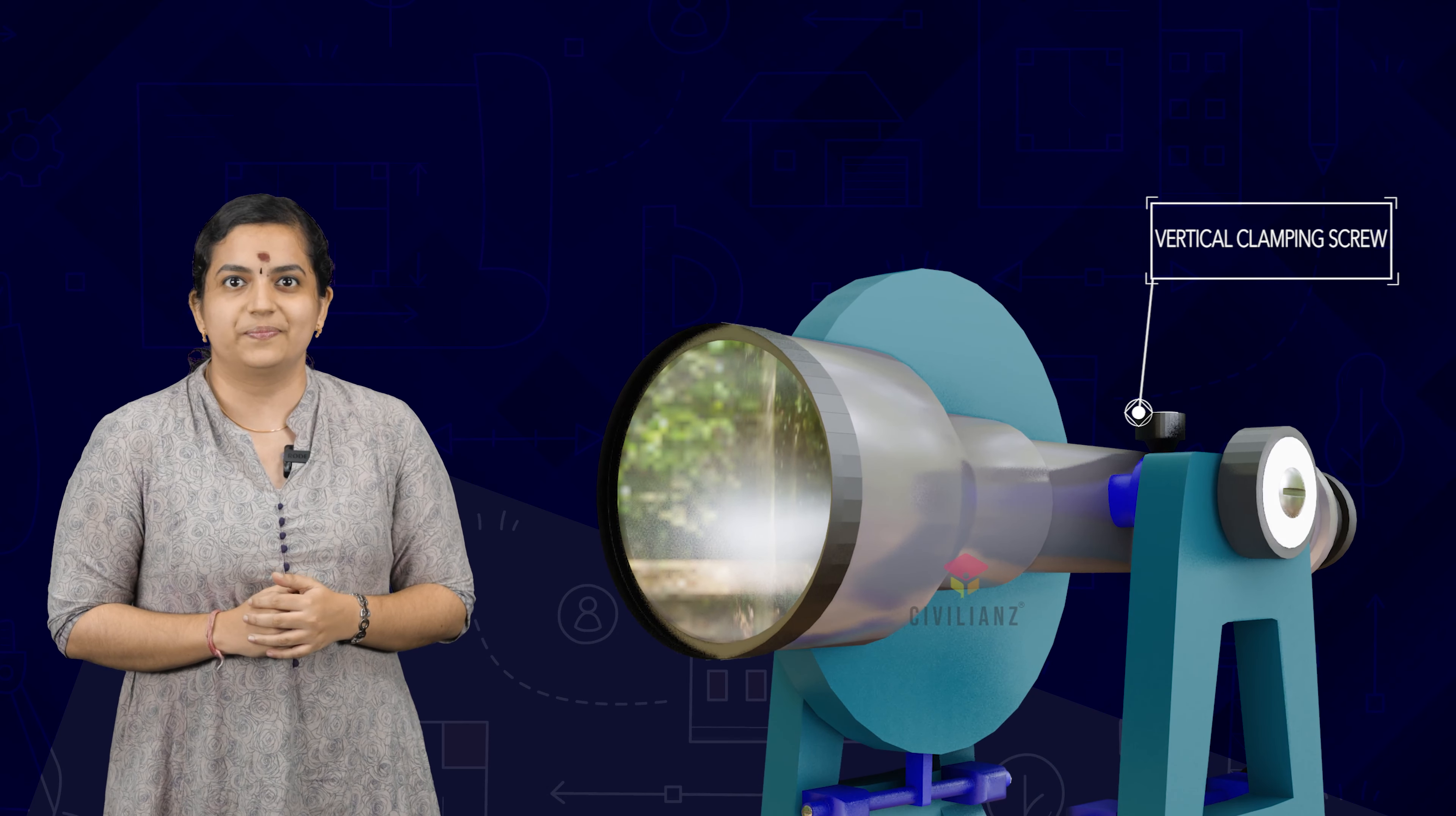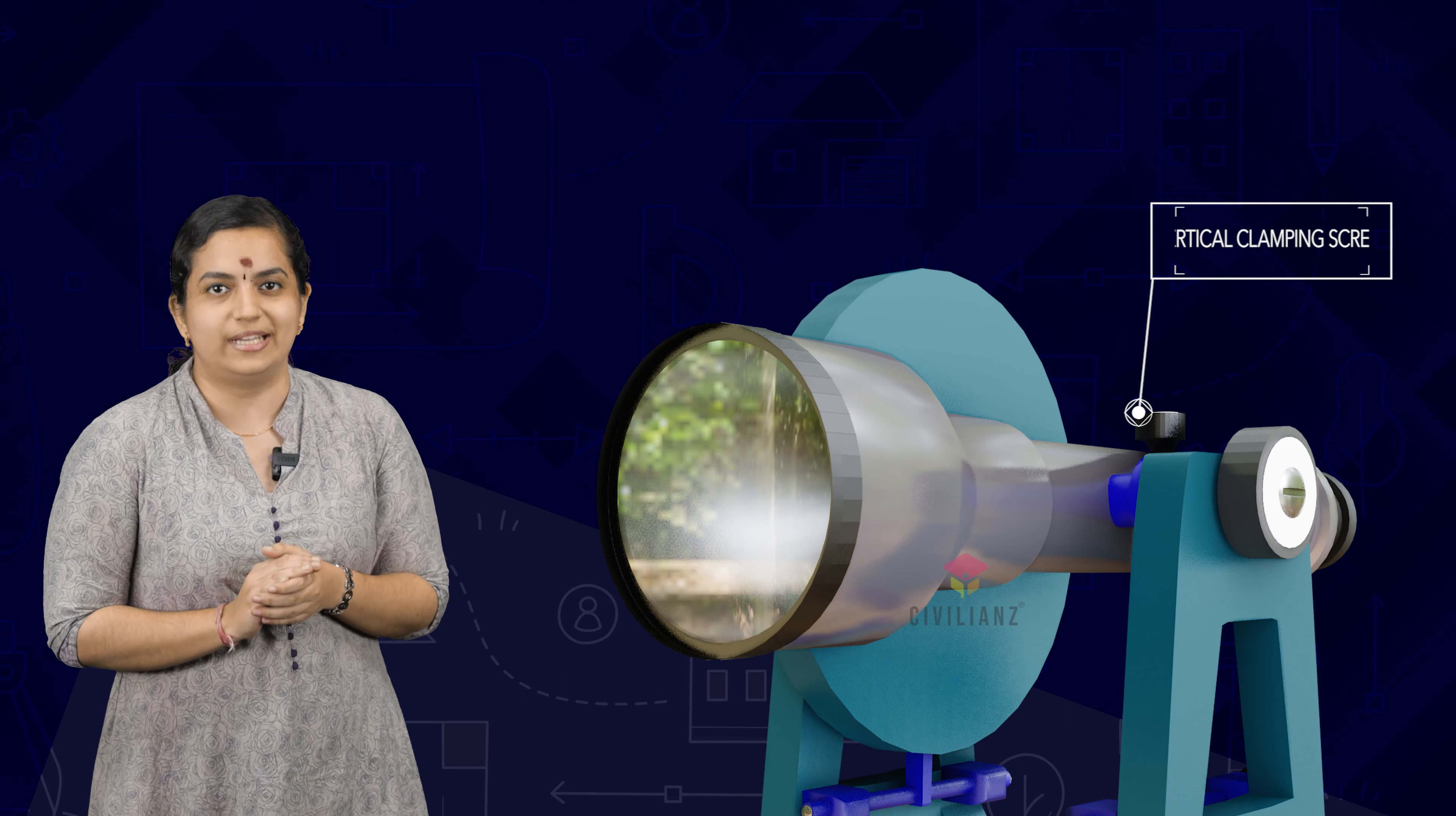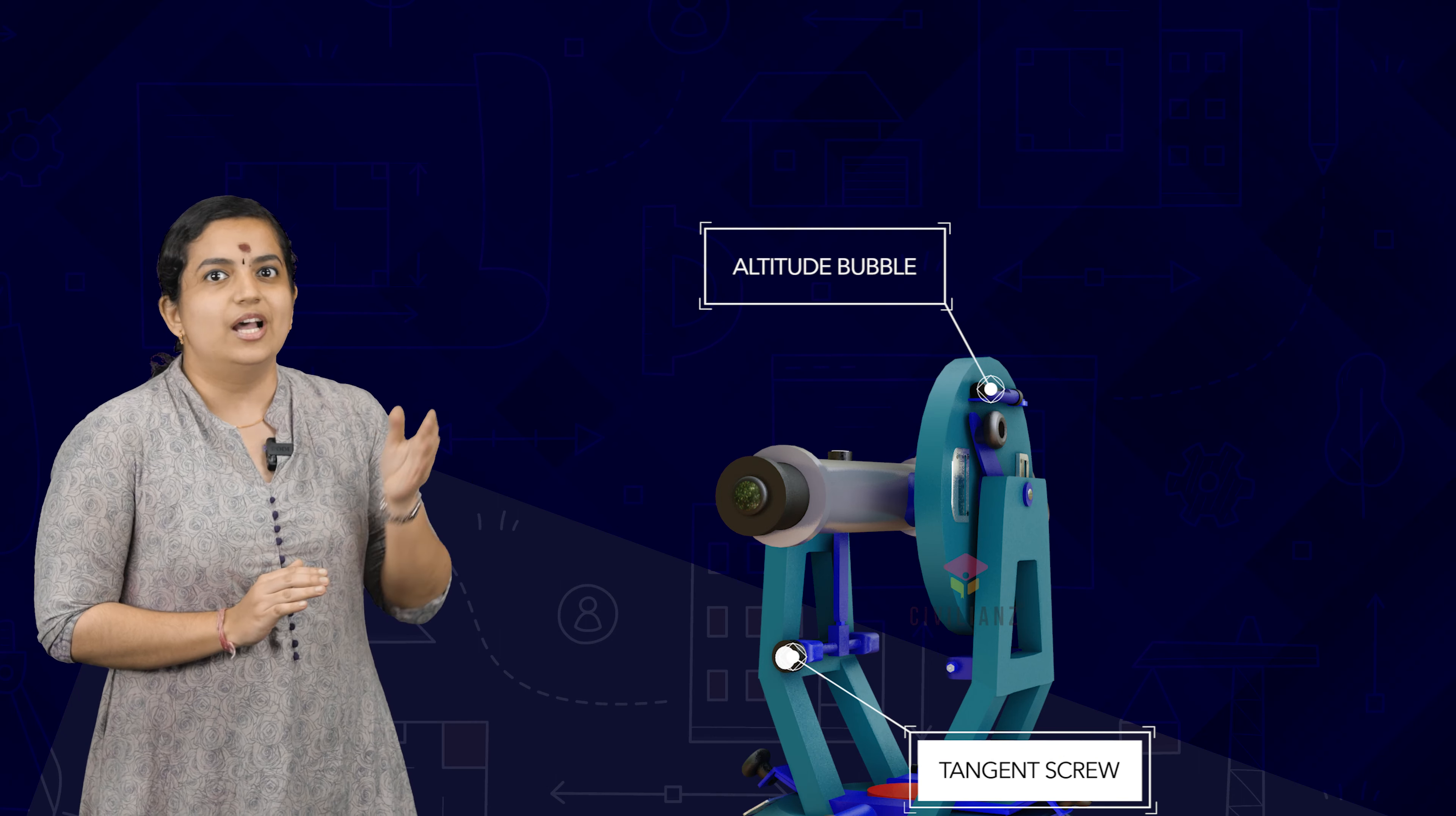The vertical circle is required while taking measurements for vertical angles. By means of vertical circle clamping screw and the corresponding slow motion screw or tangent screw, the telescope can be set accurately at any desired position in the vertical plane.